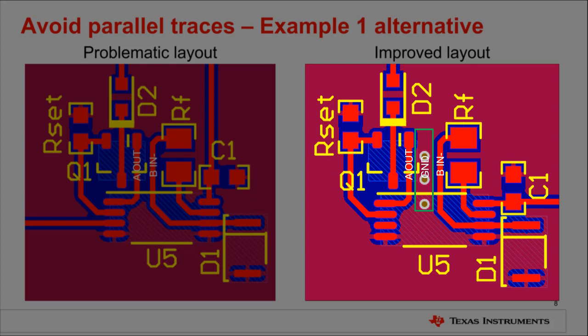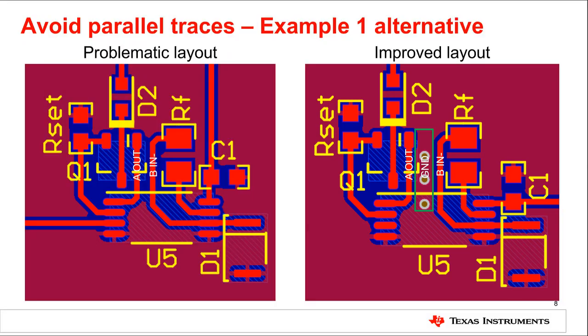First, the traces are separated as much as possible. Then, the ground pore on the top layer in red is permitted to run between the traces. The ground pore acts as a shield to prevent coupling between the signal traces. For further protection, ground vias can also be placed here to ensure the voltage at this point of the ground plane is common to the voltage of the ground plane on the bottom layer in blue. Thus, for cases where parallel traces must be used, ground shielding with a ground plane and vias is a viable option.